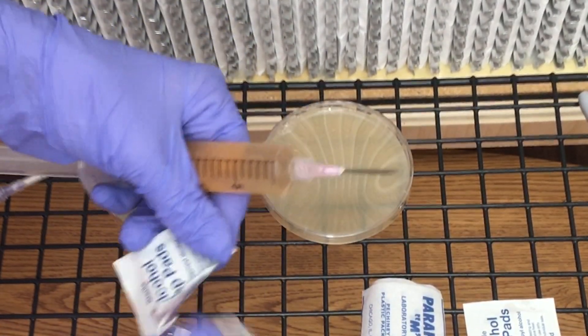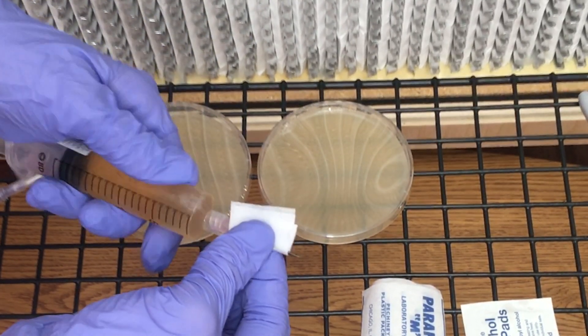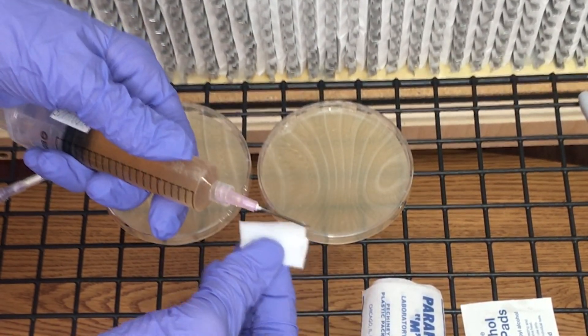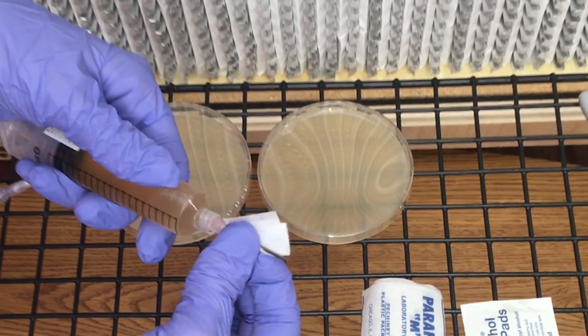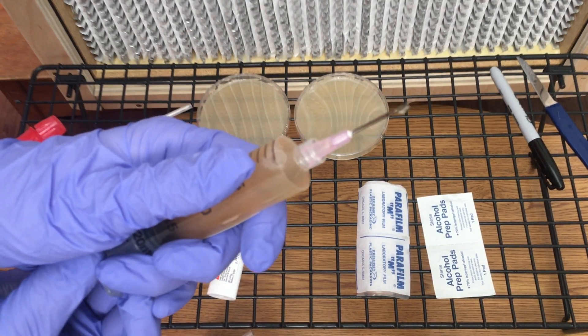Then wipe off the needle with an alcohol pad to remove the soot. Squirt a few drops of water from the tip.